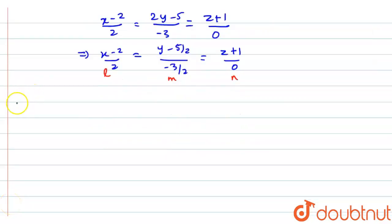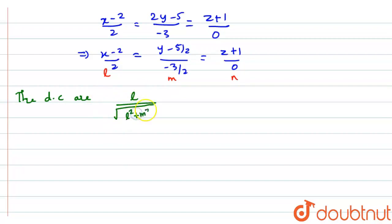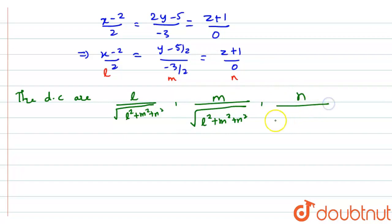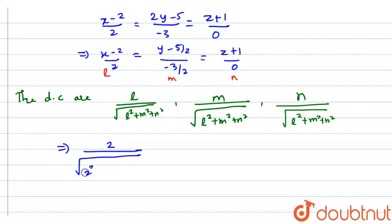Now we're going to find the direction cosines. The direction cosine formula is: L divided by square root of L squared plus M squared plus N squared, comma M divided by square root of L squared plus M squared plus N squared. When I apply this formula, L is 2: 2 divided by square root of 2 squared plus (minus 3 by 2) squared plus 0 squared.